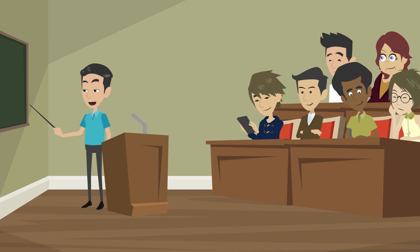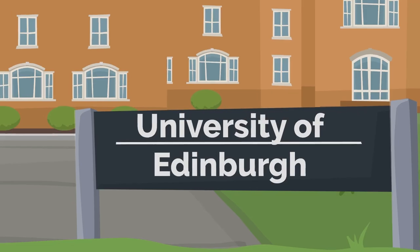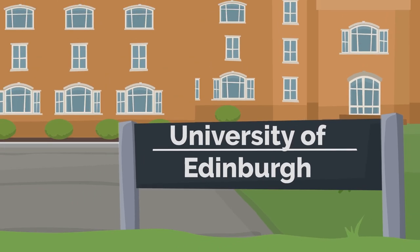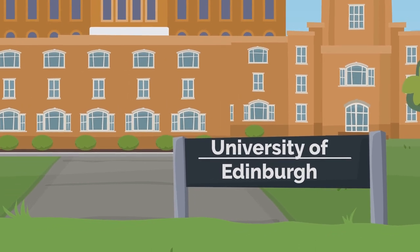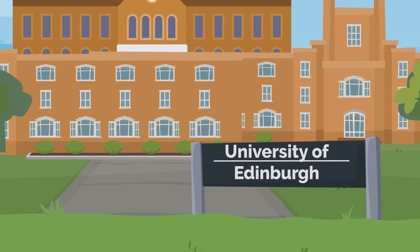Graham soon followed in his father's footsteps and became a teacher for the deaf. At 16, Graham got a job as a teacher of music and elocution in Weston House Academy at Elgin, Scotland. The following year, Graham enrolled at the University of Edinburgh, where he joined his elder brother Melville, who had been enrolled there the previous year.